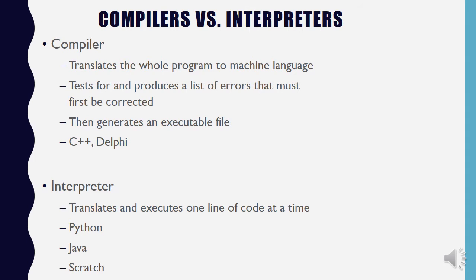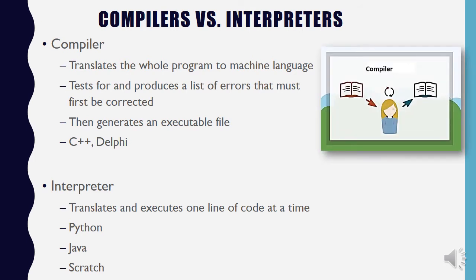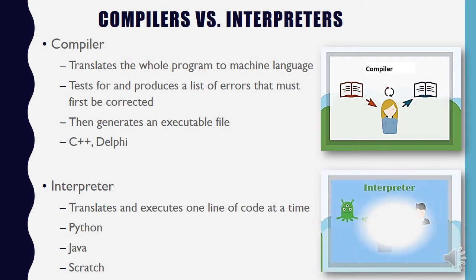An interpreter takes one line of code at a time, translates it, and then executes it. Then it takes the next line, translates that, and executes it. It's almost like a live interpreter translating speech from English to French. Python, Java, and Scratch are all executed using interpreters.